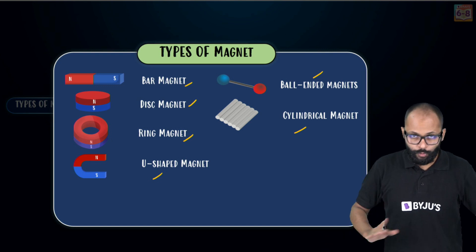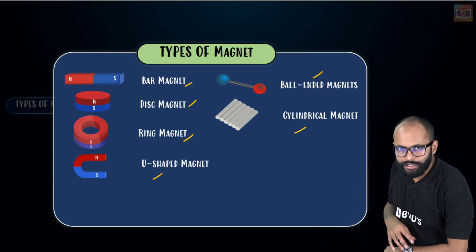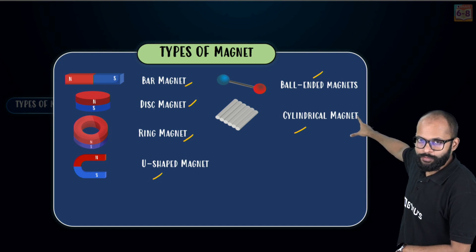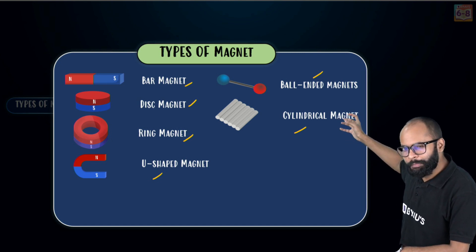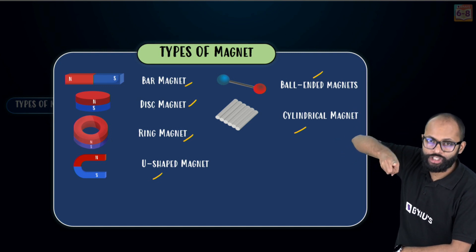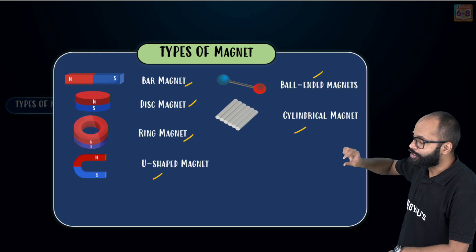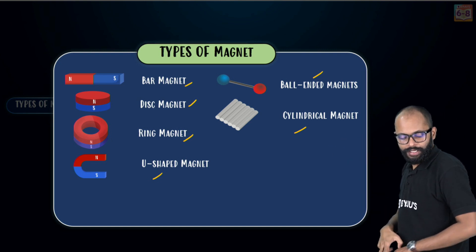We have like a bar magnet, disc magnet which is in a shape of disc, then we have a ring magnet like a ring, U-shaped magnet, ball-ended magnet, cylindrical magnet. Like two poles, not more than that, not less than that. Every magnet will have two poles.